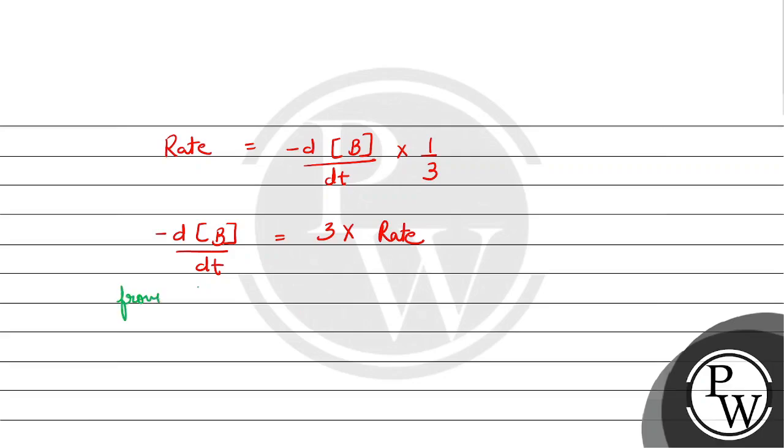Now from equation number 1, we have rate equal to 10^-2 mol/L/s. If we put its value in this equation, we get -d[B]/dt is equal to 3 × 10^-2 mol/L/s.